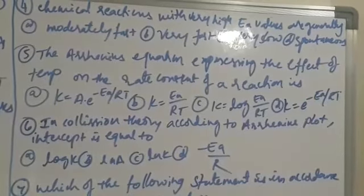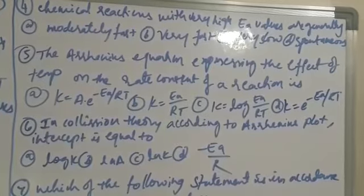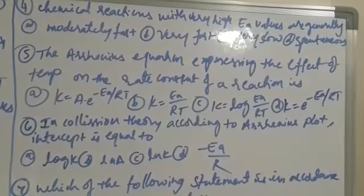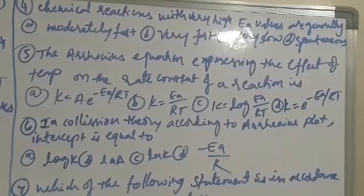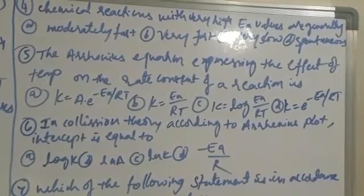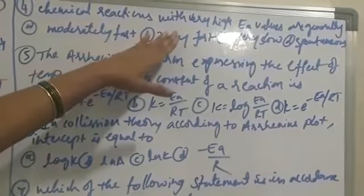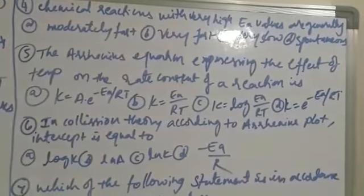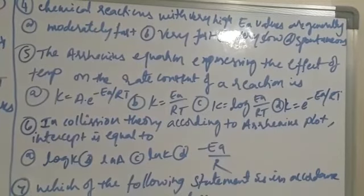Next, chemical reactions with very high activation energy values are generally very slow. You know that greater the activation energy, lesser is the rate of reaction. So if activation energy is very high, rate of reaction is very slow.